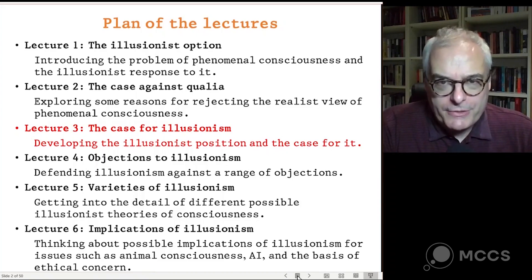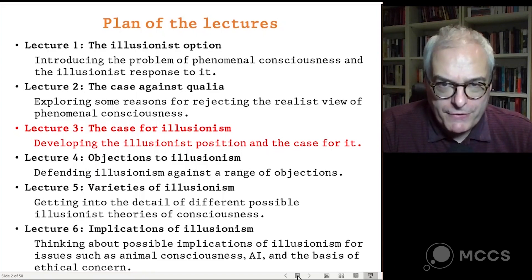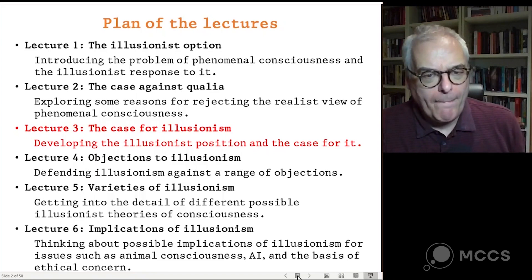In the second lecture, we started to build the case for this illusionist view by looking at arguments against the alternative realist view — the view that consciousness does involve awareness of qualia. We looked at a variety of arguments presented by Daniel Dennett. In this lecture, we're going to continue to build the case for illusionism by looking at some positive arguments for the view, to supplement the arguments against the alternative.